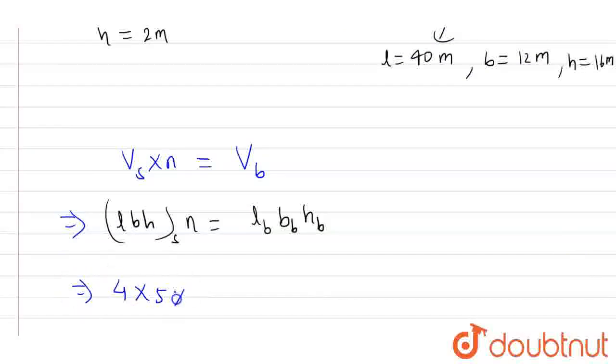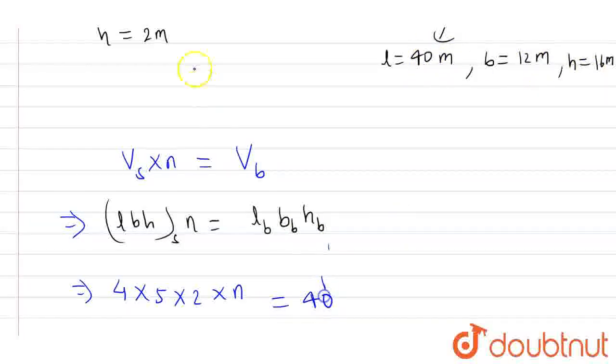4 into 5 into 2 into N. And how much is big? Big is, look at 40. Look at how much is it? 40, 12 and 16. So 40, 12 and 16.